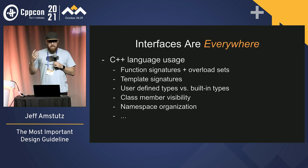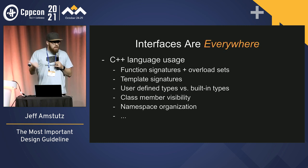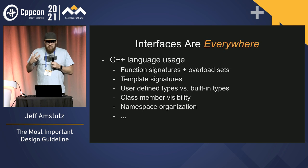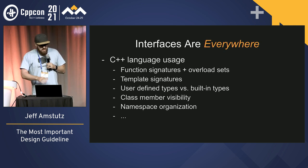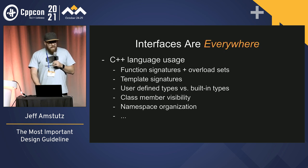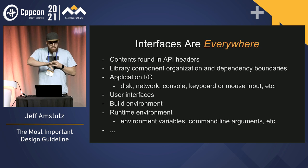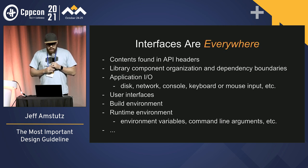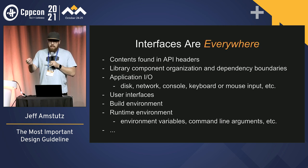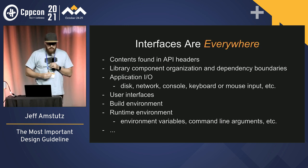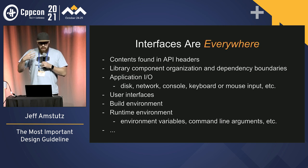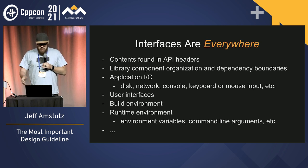The reason to talk about interfaces and designs is because interfaces are everywhere. When we think about the language, you have interfaces for function signatures, for template signatures, what your user-defined types look like, choosing class member visibility — all over the place in the language you're making design choices. But even more than that, there are design choices in how you organize things: what goes in your headers, what is the architecture and structure of your project, how does your application do IO, how does it interact with the disk or with network? User interfaces are pretty obvious. One that people rarely think about is your build environment — how your C++ code gets turned into binary code. That's actually something that a person interfaces with, so you could even consider that an interface. And of course, runtime environments. Interfaces are everywhere, so we should probably talk about how to make them better.